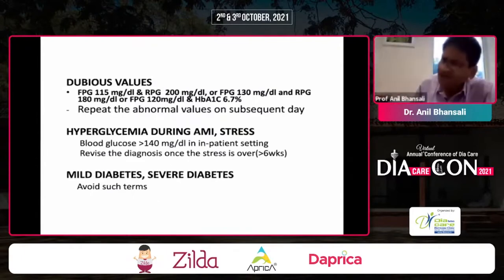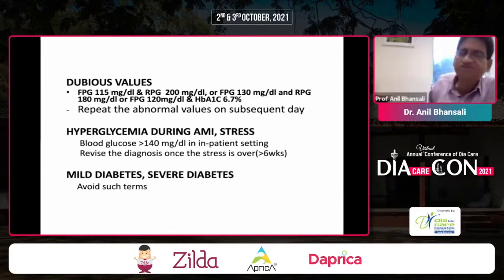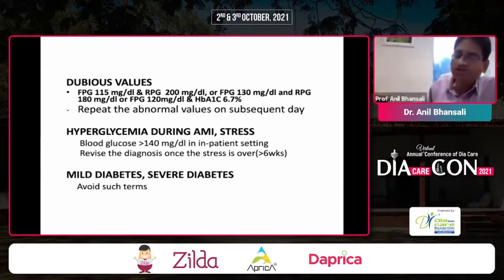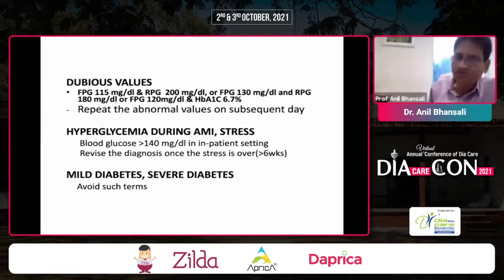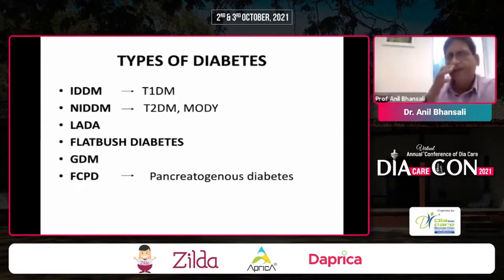When you get dubious values — for instance random plasma glucose of 115, fasting of 115, random of 200, or fasting of 130 with random of 180 — where only one value fits the diagnosis, repeat the abnormal value on a subsequent day. Hyperglycemia during acute MI or stress should be re-evaluated; a blood glucose of more than 140 is considered hyperglycemia. Revise the diagnosis once the stress is over. Do not use appeasing terms like 'mild diabetes' or 'borderline diabetes.'